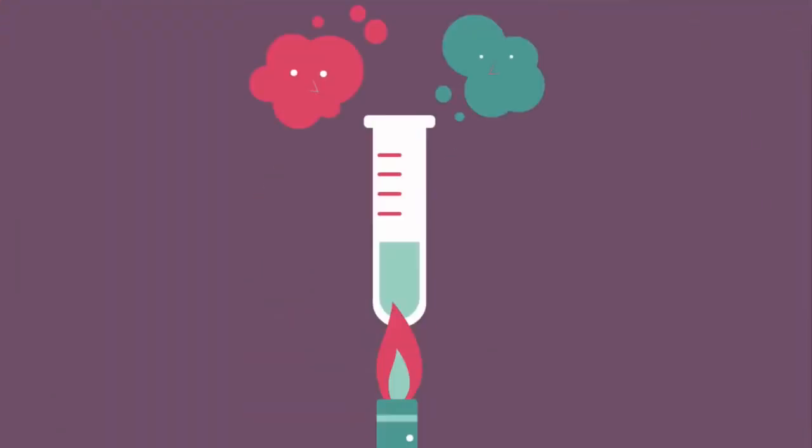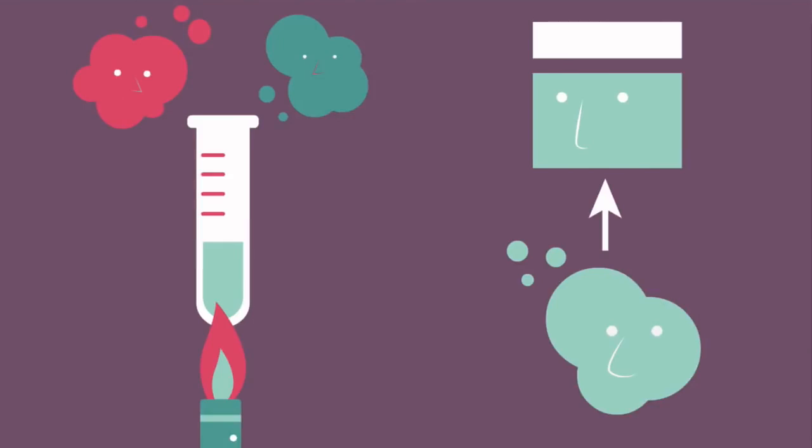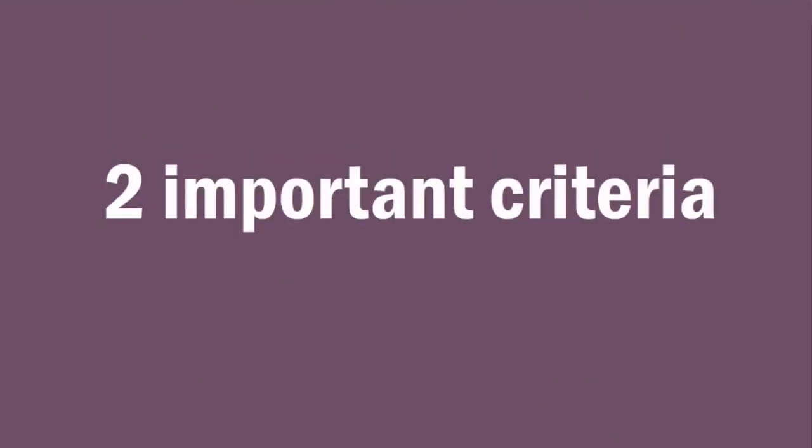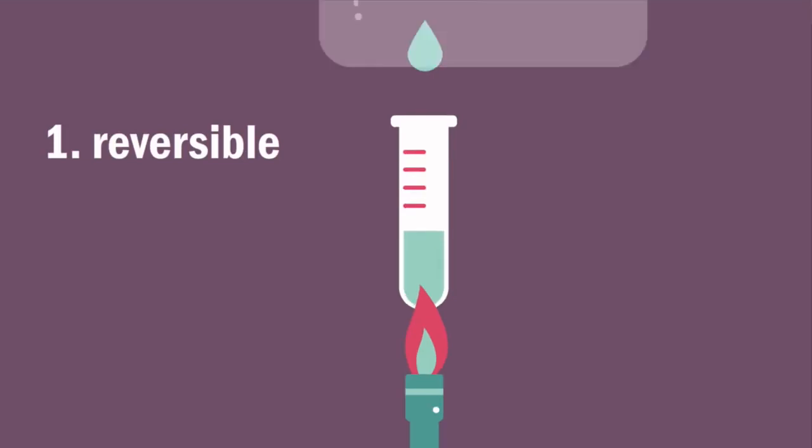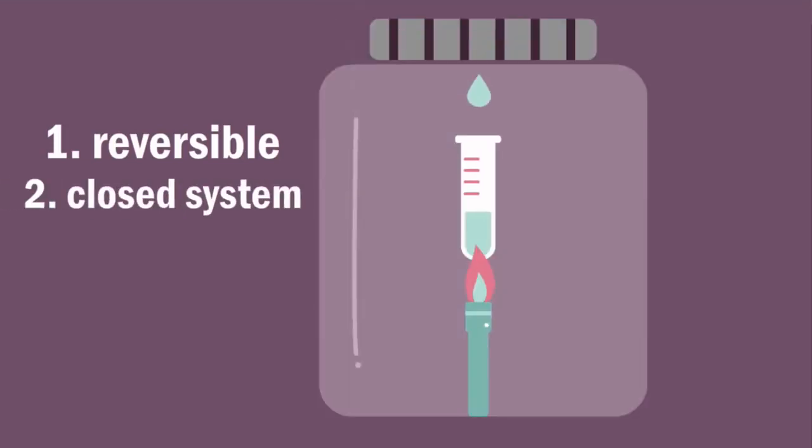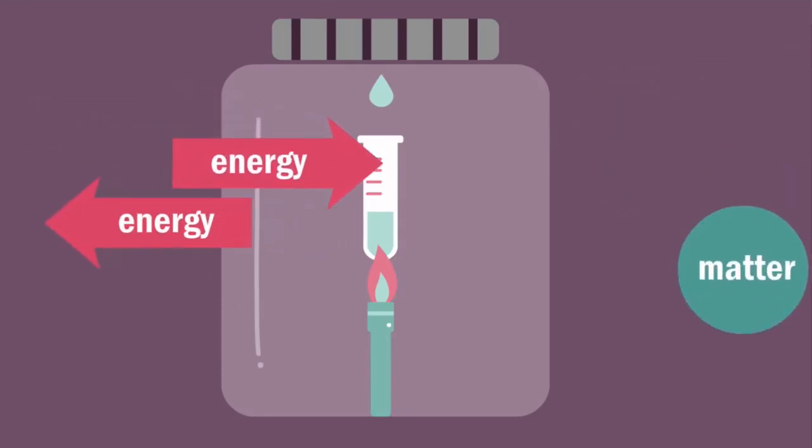For a chemical system, such as a reaction or a phase change, to be at equilibrium, it must meet two important criteria. First, it must be a reversible process. Second, it must be taking place in a closed system. A closed system is one where there is no exchange of matter, only exchange of energy.